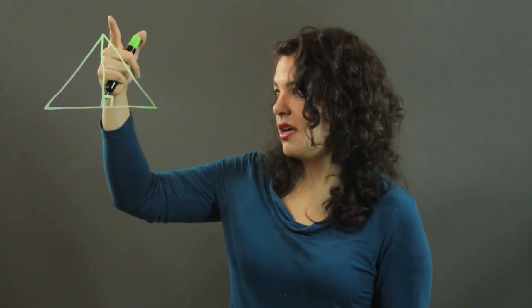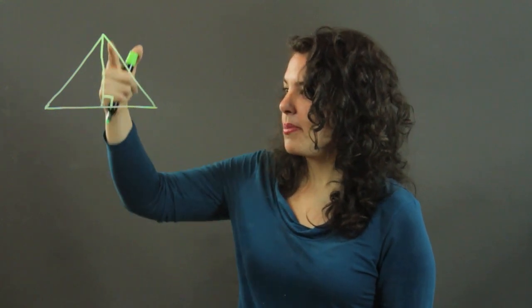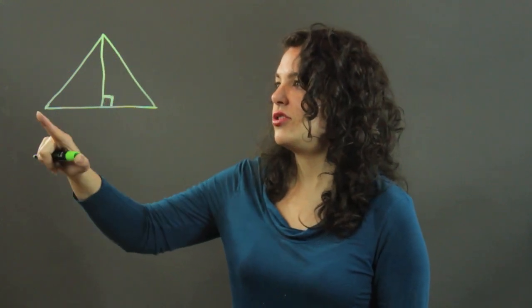You get the height by finding the vertex opposite your base and just drawing a line, a perpendicular line perpendicular to your base.